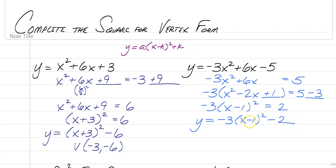And to state our vertex, it's opposite of what's inside comma the outside. So our vertex is 1 comma negative 2. And that's it.